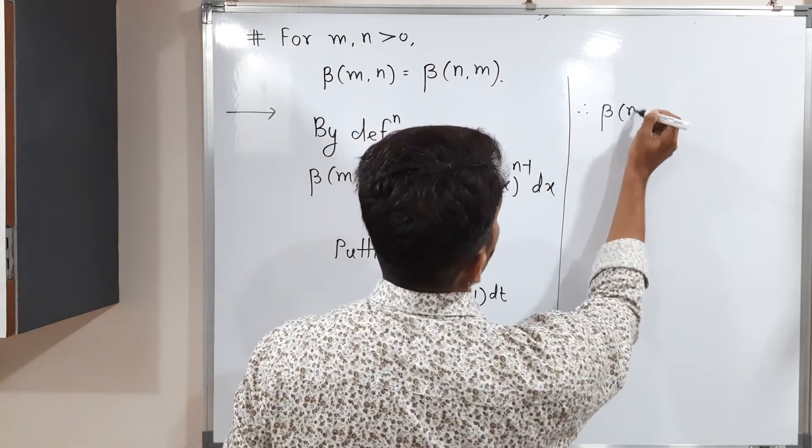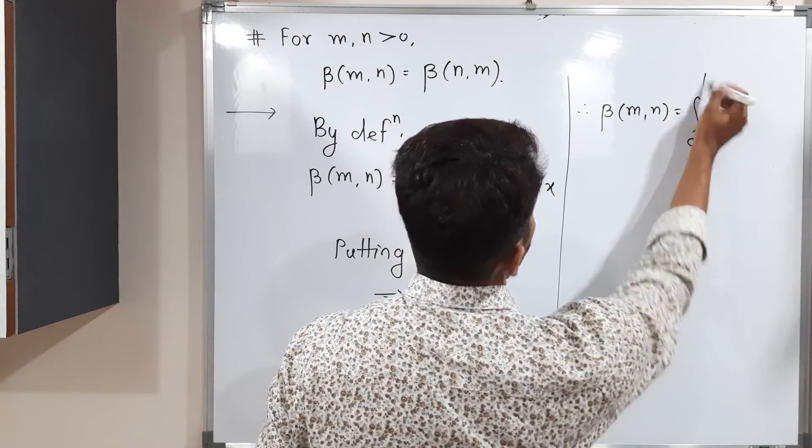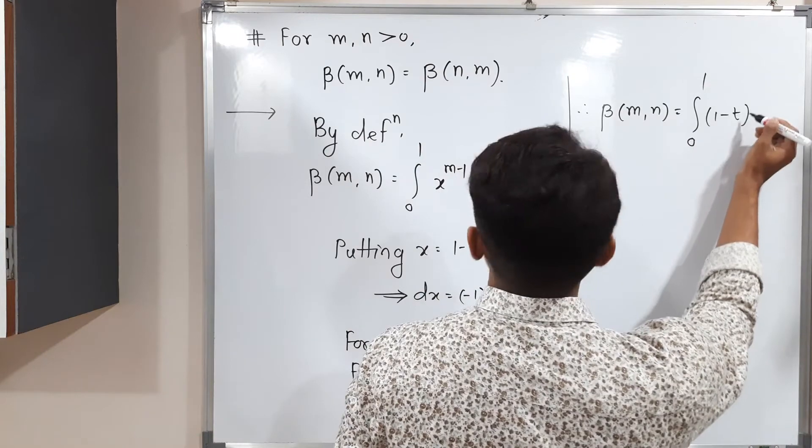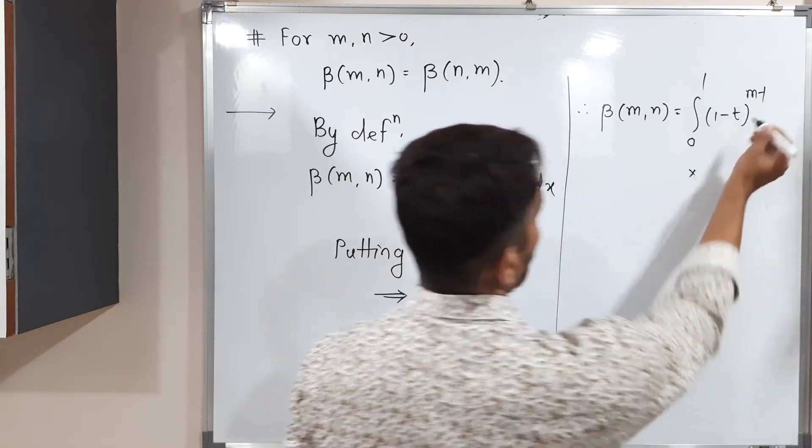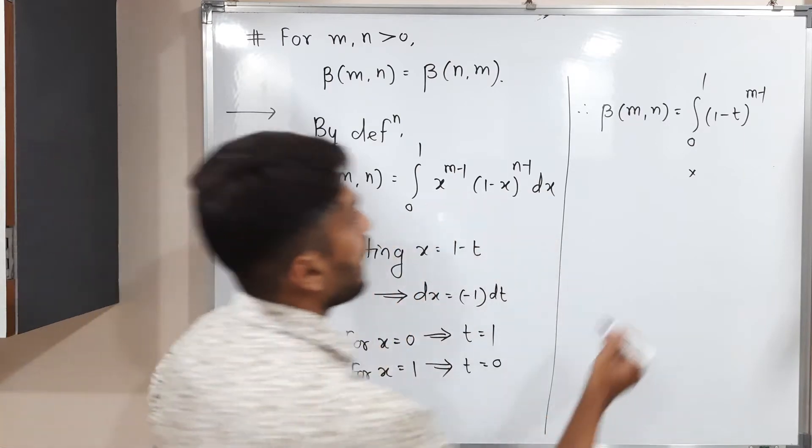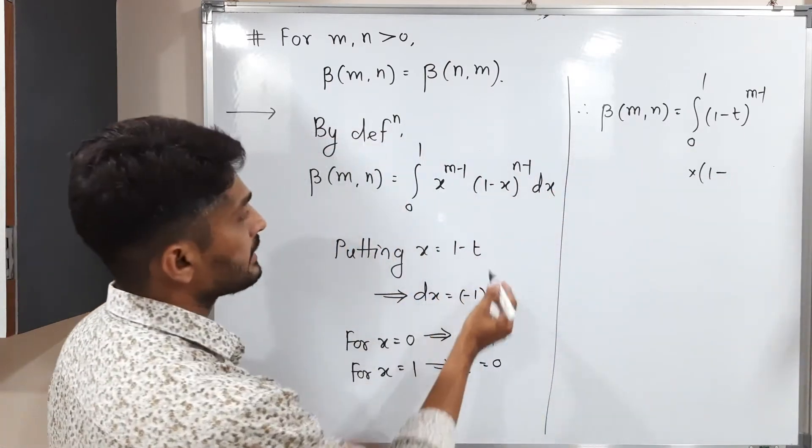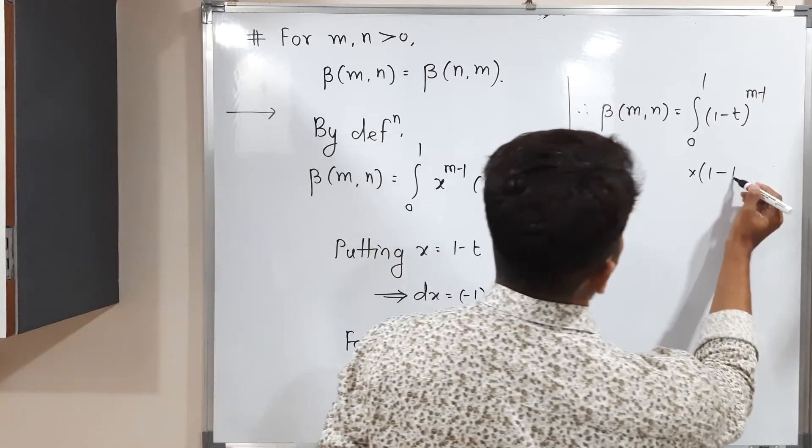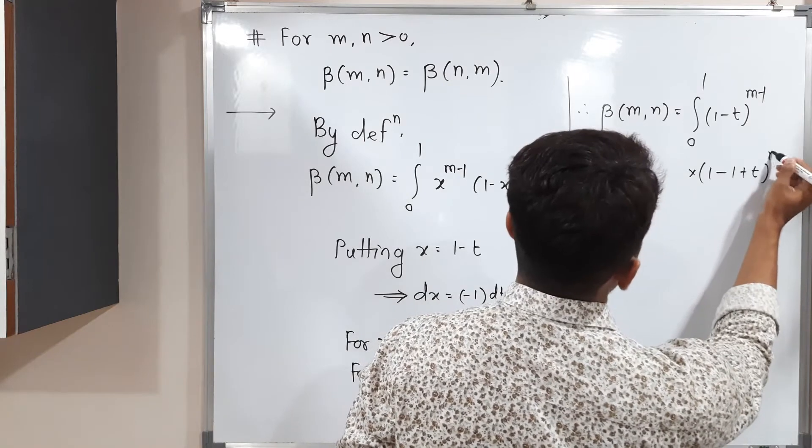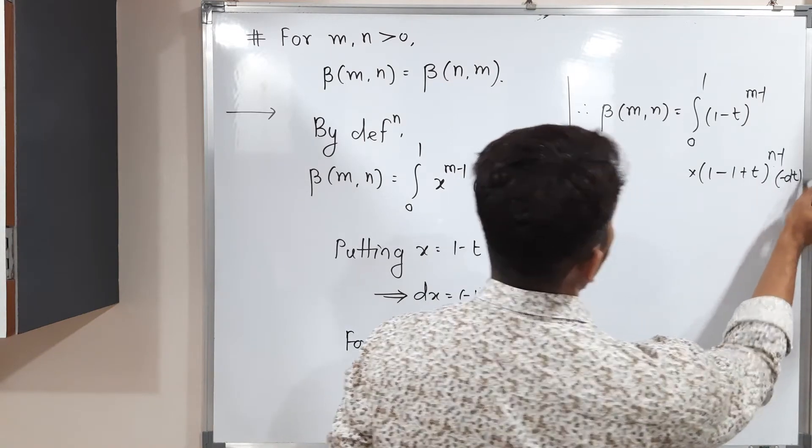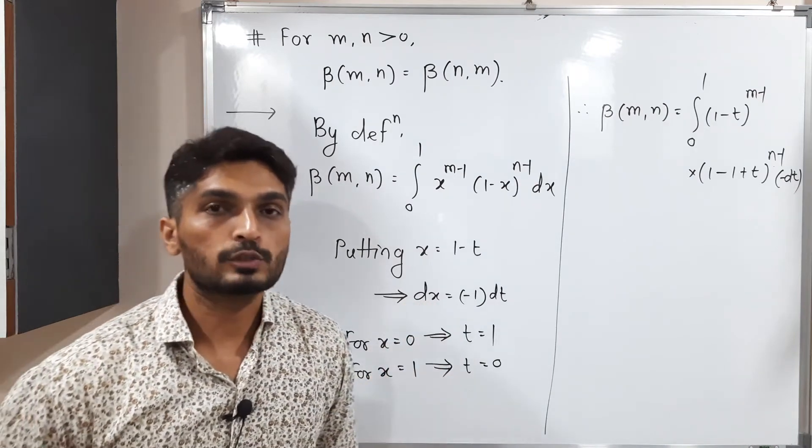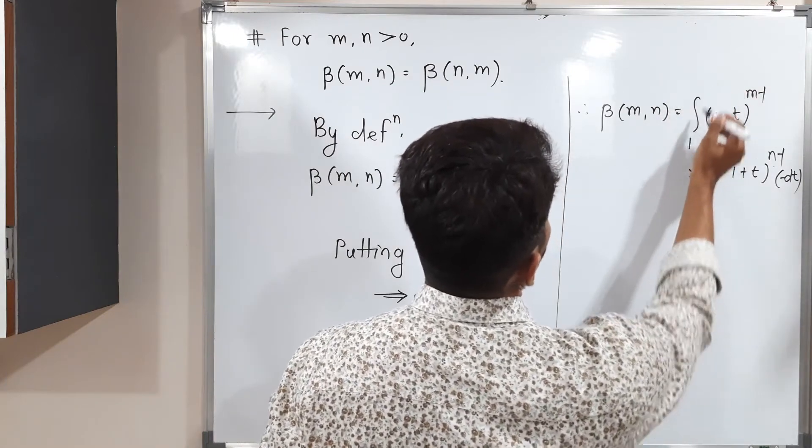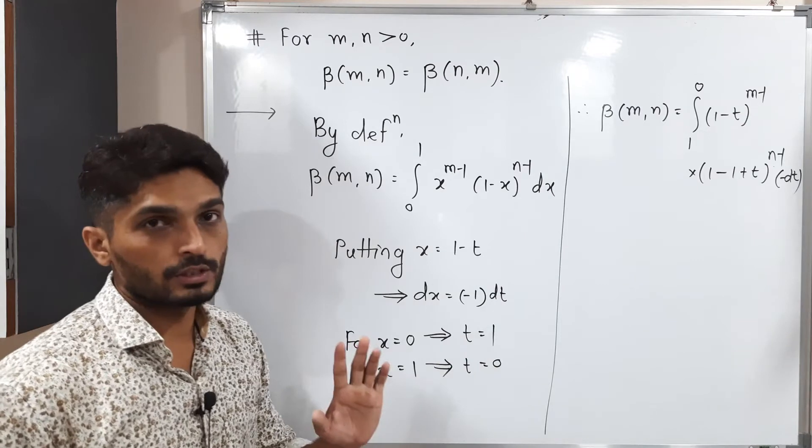Therefore, beta of mn is equal to integration 0 to 1. x means 1 minus t. So 1 minus t raise to m minus 1 into, 1 minus 1 minus, what is my x? 1 minus t. See, there is already minus sign outside. So sign will get changed and we will have t raise to n minus 1 into minus dt. So the integration limit should be 1 to 0 since our new limits are 1 to 0.